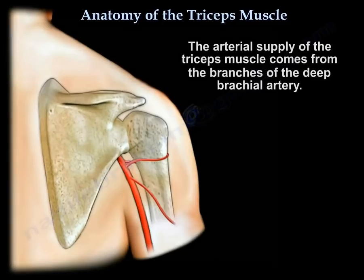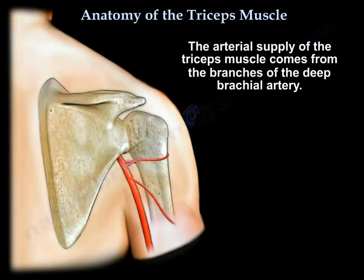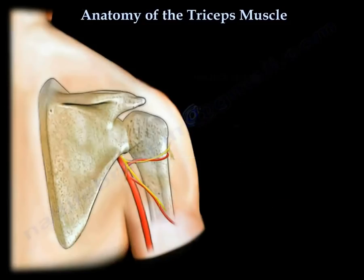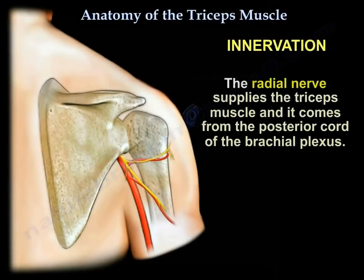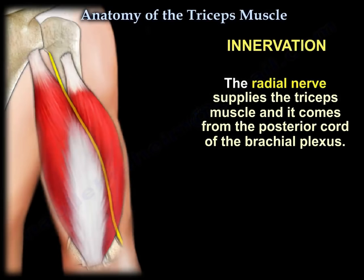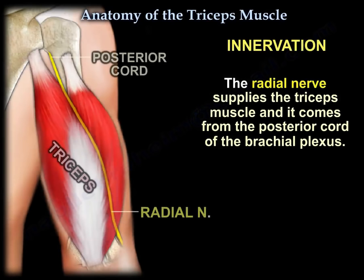The arterial supply of the triceps muscle comes from branches of the deep brachial artery. Innervation of the triceps muscle comes from the radial nerve, which arises from the posterior cord of the brachial plexus.